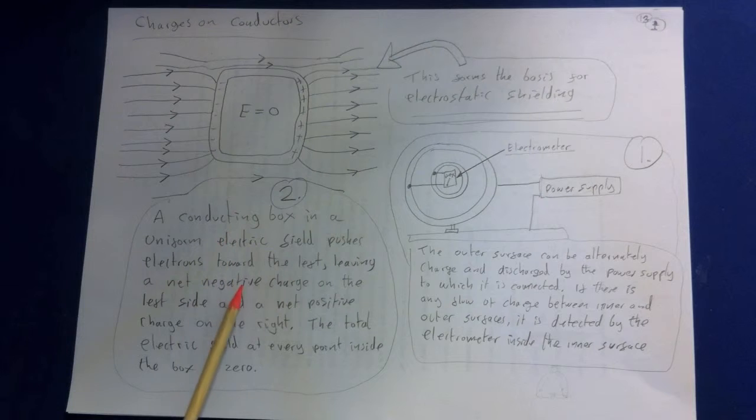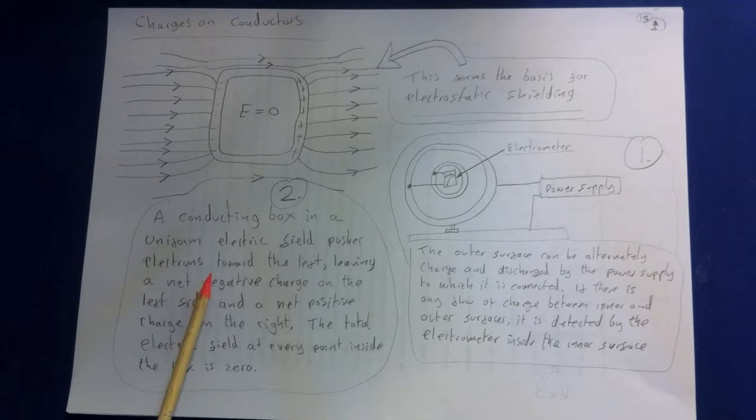This all came about by Gauss thinking about point charges as little spheres and making the valid and correct assumption that the force lines emanating from the charge, the electric field flux, would be directly proportional to the charge. So this whole discussion also forms the basis for electrostatic shielding.